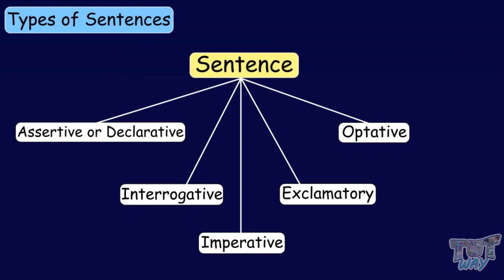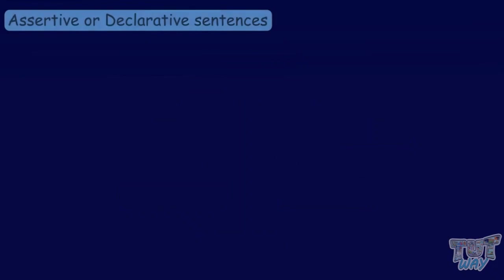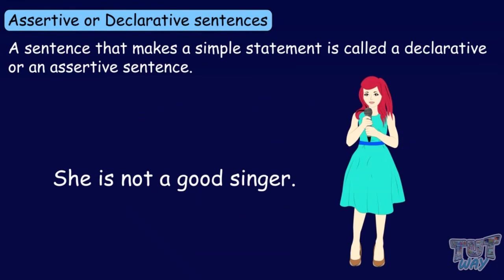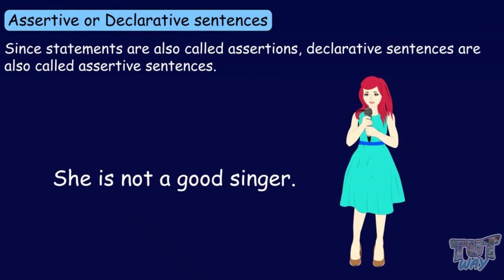First of all, let's learn about assertive or declarative sentences. A sentence that makes a simple statement is called a declarative or assertive sentence. Since statements are also called assertions, declarative sentences are also called assertive sentences.